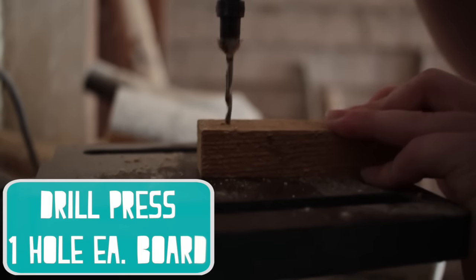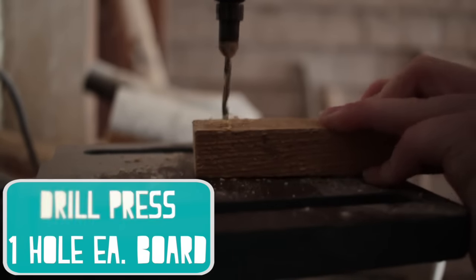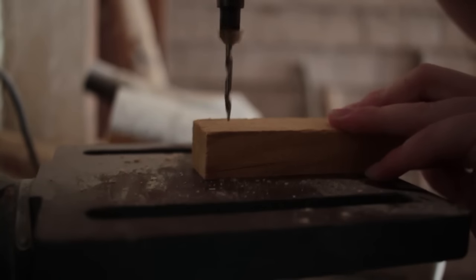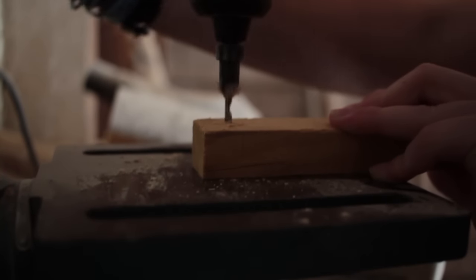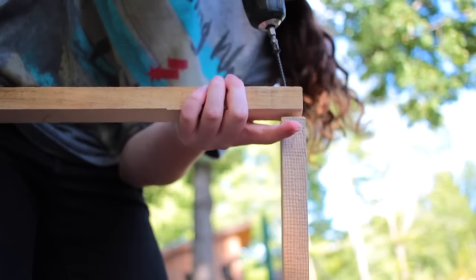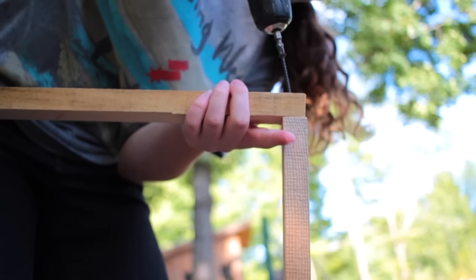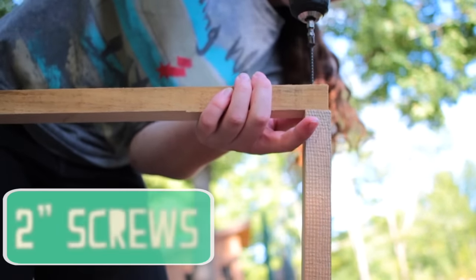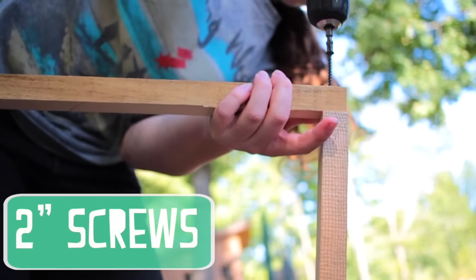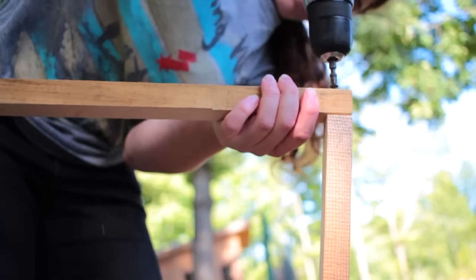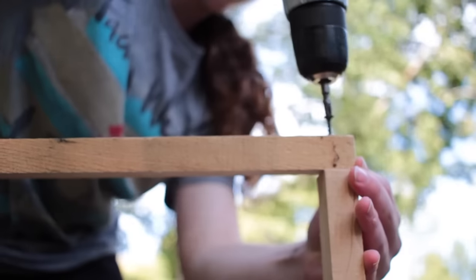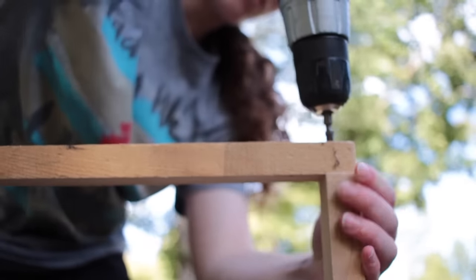Then I went to the drill press and drilled a hole in each of them just on one side. And then I started drilling the frames together and just overlapped each piece so it would be a 28 inch square inside. So here's what it looks like.